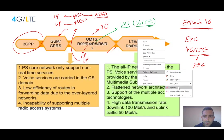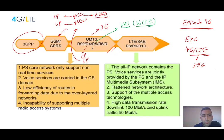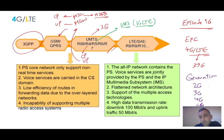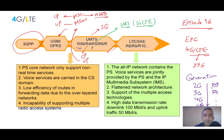Besides the generations of mobile networks — 2G, 3G, 4G, 5G, and now the study of 6G — we also have numbered 3GPP releases that started with R99. Currently we are around R17. For LTE and SAE (System Architecture Evolution), the relevant releases begin at R8, R9, R10, and so on.